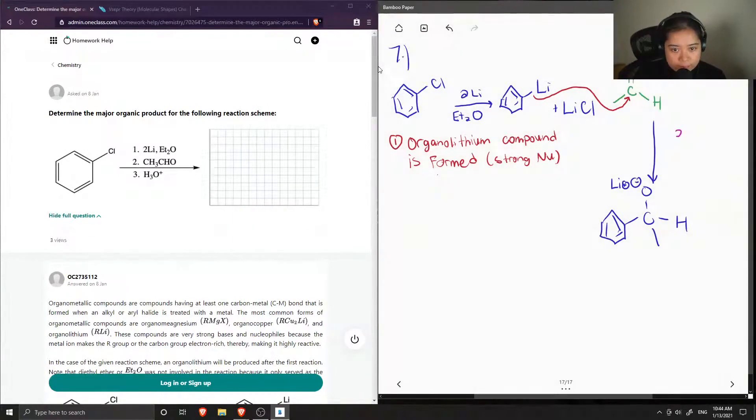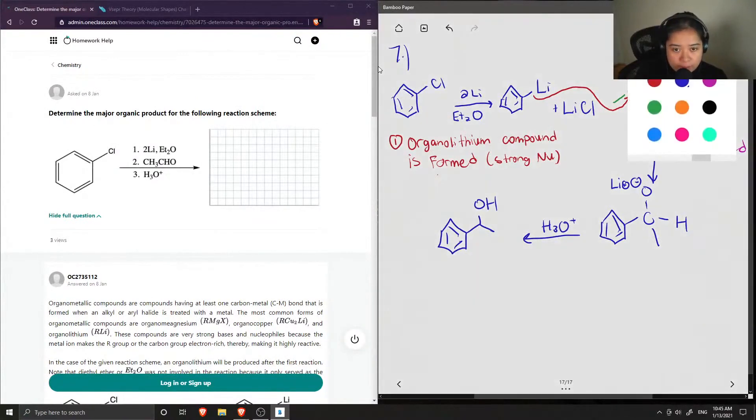So step two, we had the carbonyl being attacked. And now for step three, this reacts with H3O+, which in turn forms an alcohol group for our final product.